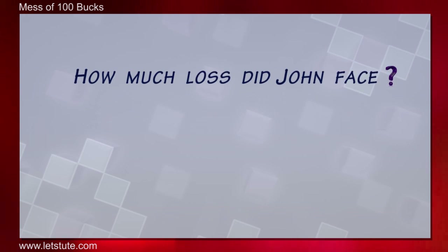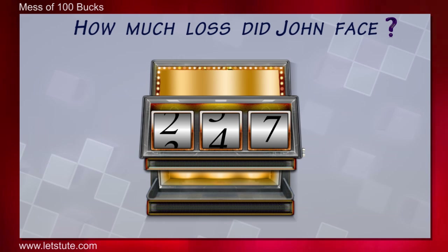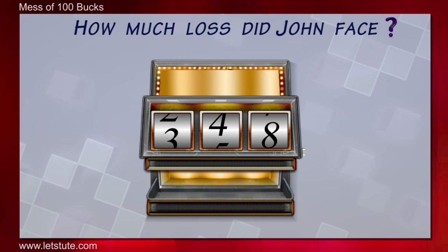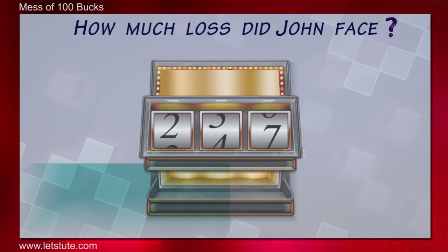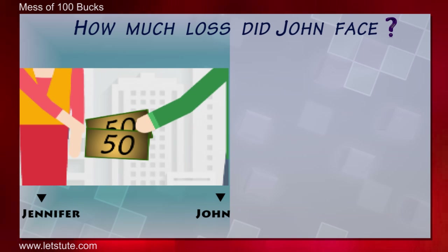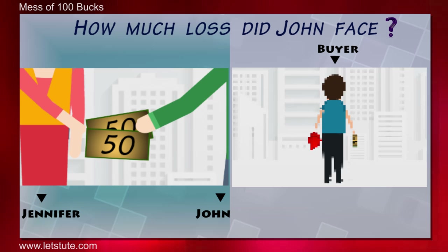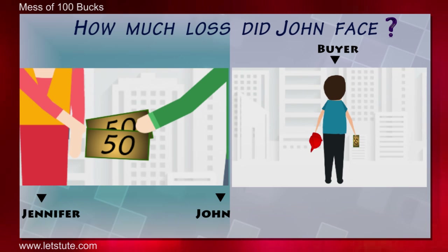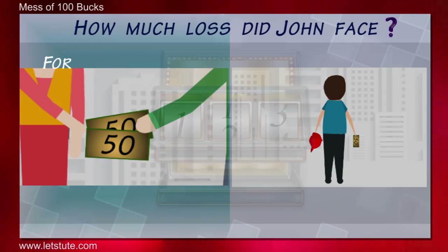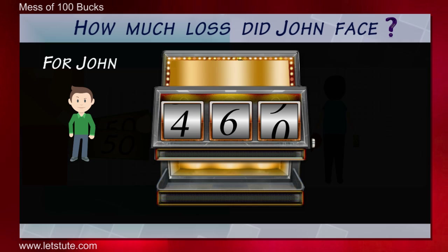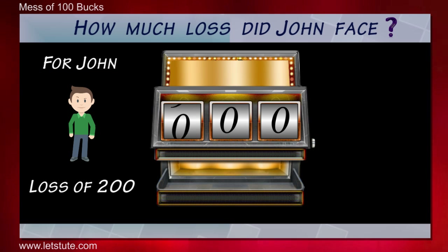You may just pause this video and calculate his loss. How much did you get? Well, if we go to see, John gave 100 bucks to Jennifer. The cap worth 50 which he sold plus the 50 bucks which the buyer took away. So for John, it's a loss of overall 200, right?